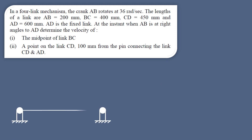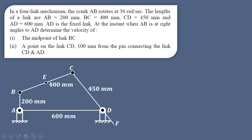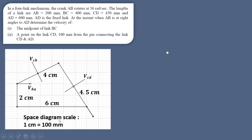Let us first draw this mechanism to a suitable scale. The link lengths are: AB is 200 mm perpendicular to AD, BC is 400 mm, CD is 450 mm, and AD is 600 mm. E is the midpoint of BC at 200 mm, and F is an extension of link CD at 100 mm from pin D. We take a scale of 1 cm = 100 mm. So AD is 6 cm and AB is 2 cm, drawn perpendicular to AD.